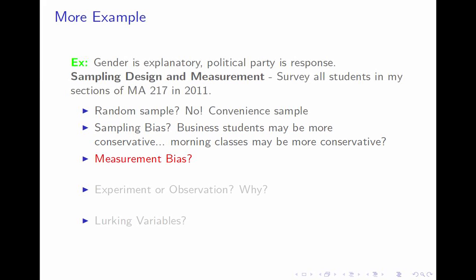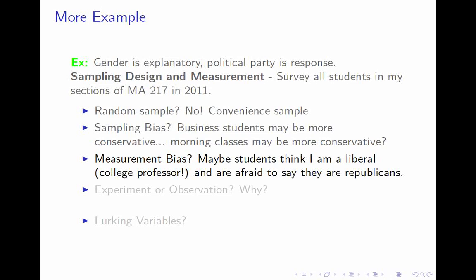Measurement bias: the most common form for us is leading questions — there are none here. Response bias: there isn't really a leading question, since I just asked what political party you belong to. But there is the possibility for response bias because people may answer what they think I want to hear. Since most college professors are liberal, students might be afraid to say they're Republican for fear of disapproval or a lower grade.